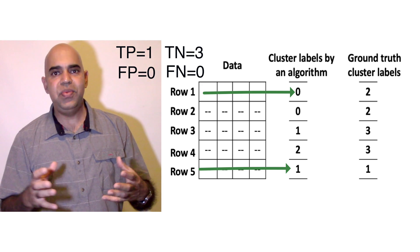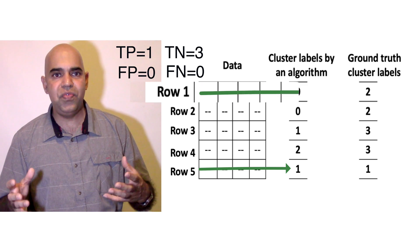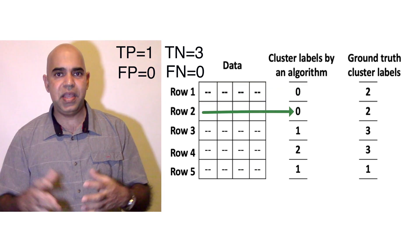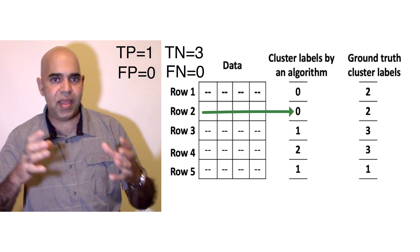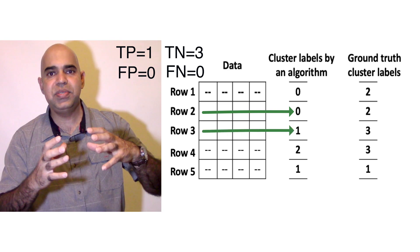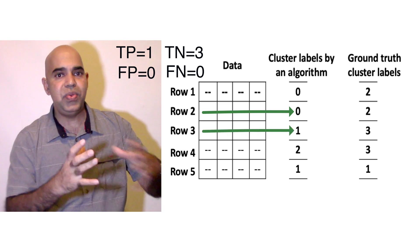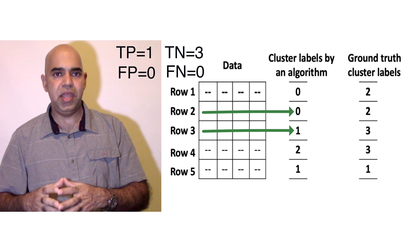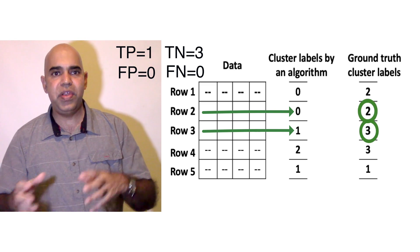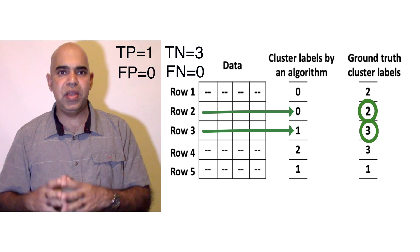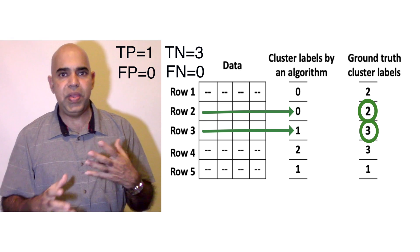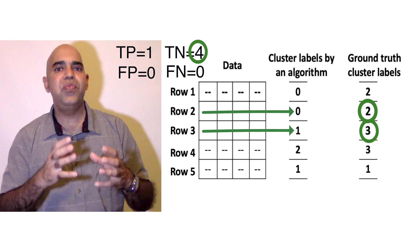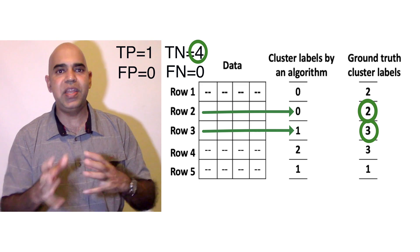We are done with the pairs involving the first row. Let us pick up the second row now. The second and third rows are from two different algorithmic clusters, so the pair is considered negative. They are also from two different ground truth clusters. Hence, we have another true negative — four true negative pairs so far.